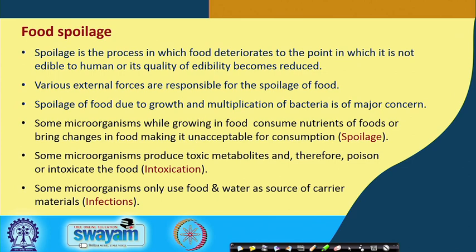Before we proceed further, let us briefly consider what food spoilage is. Spoilage is the process in which food deteriorates to the point at which it is not edible to humans — its sensory and other characteristics are changed such that we may not wish to consume it. There are different factors responsible for the spoilage of food. Spoilage may be due to the growth and multiplication of bacteria, which is one of the major concerns for food processors and consumers alike.